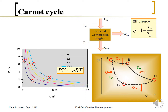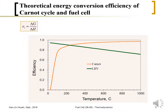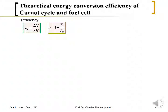We can now compare the efficiency of a fuel cell reaction with the internal combustion engine. The fuel cell efficiency is calculated from thermodynamic principles using ΔG/ΔH, which is a function of temperature. For the Carnot cycle efficiency, we assume T_C is at 25°C and examine how increasing T_H affects the overall efficiency.